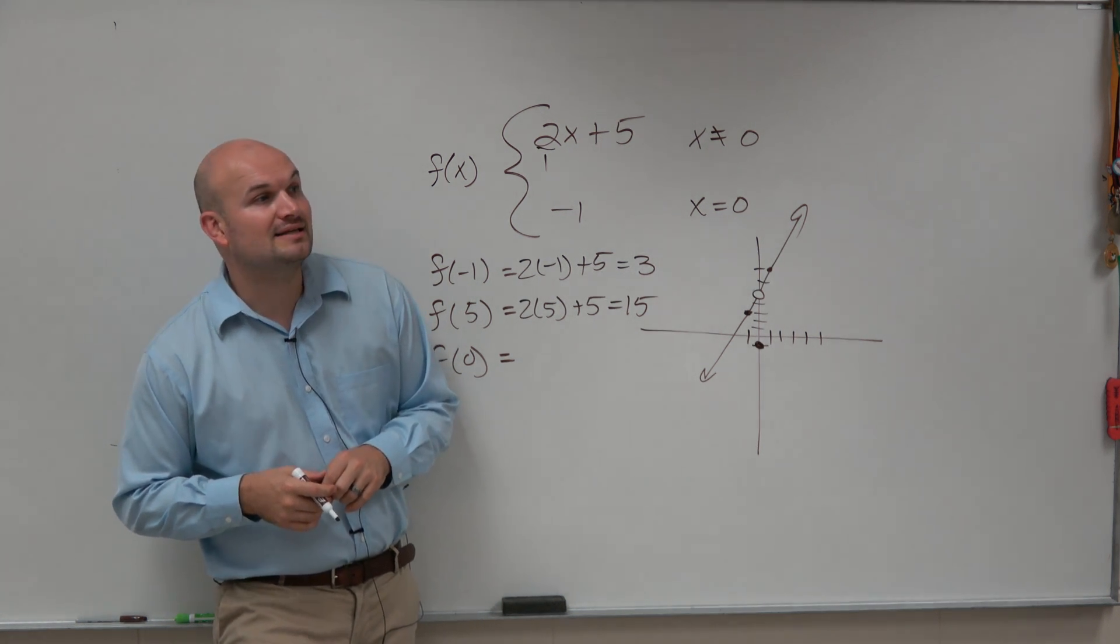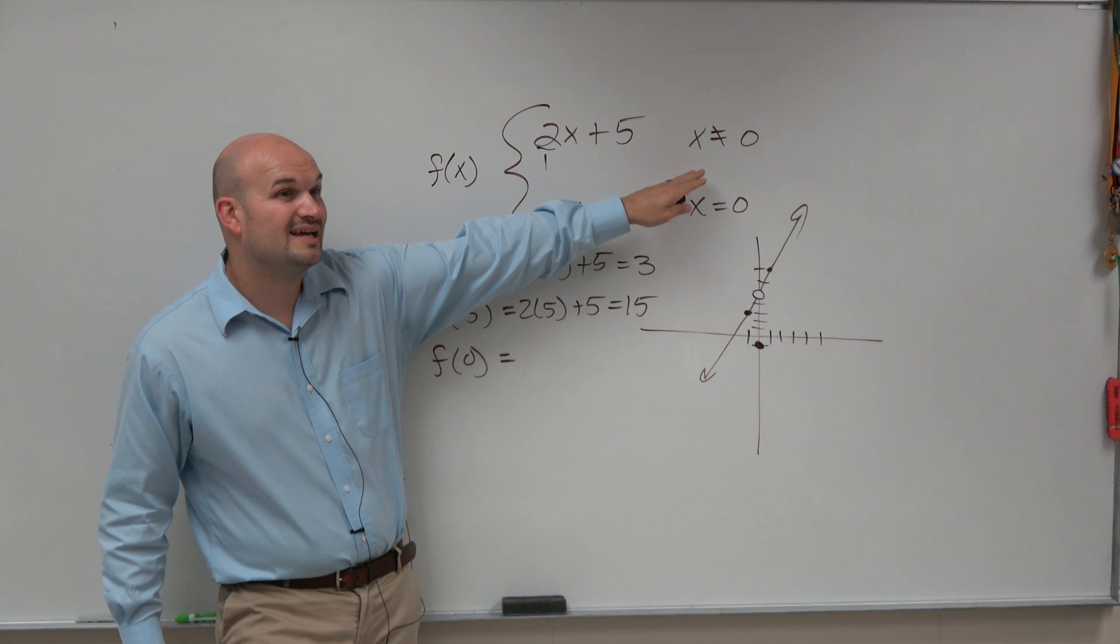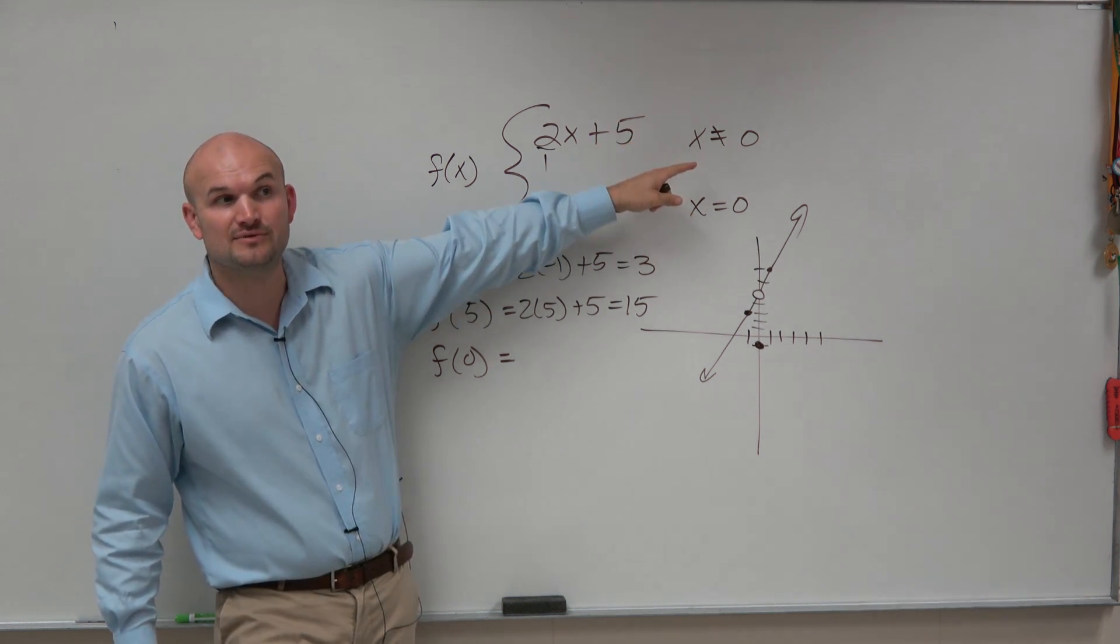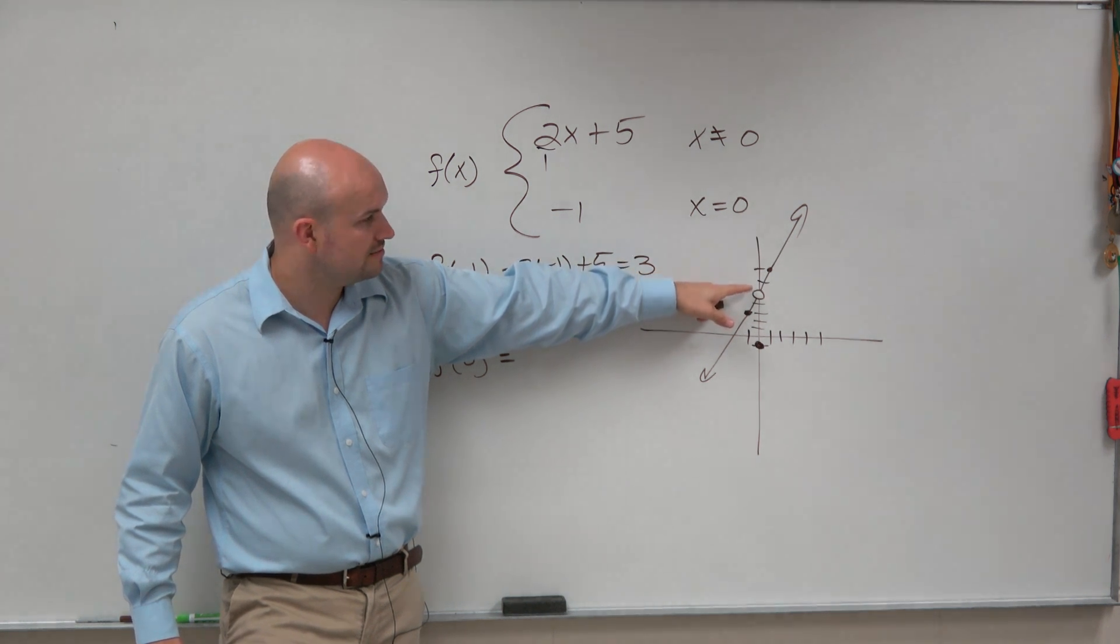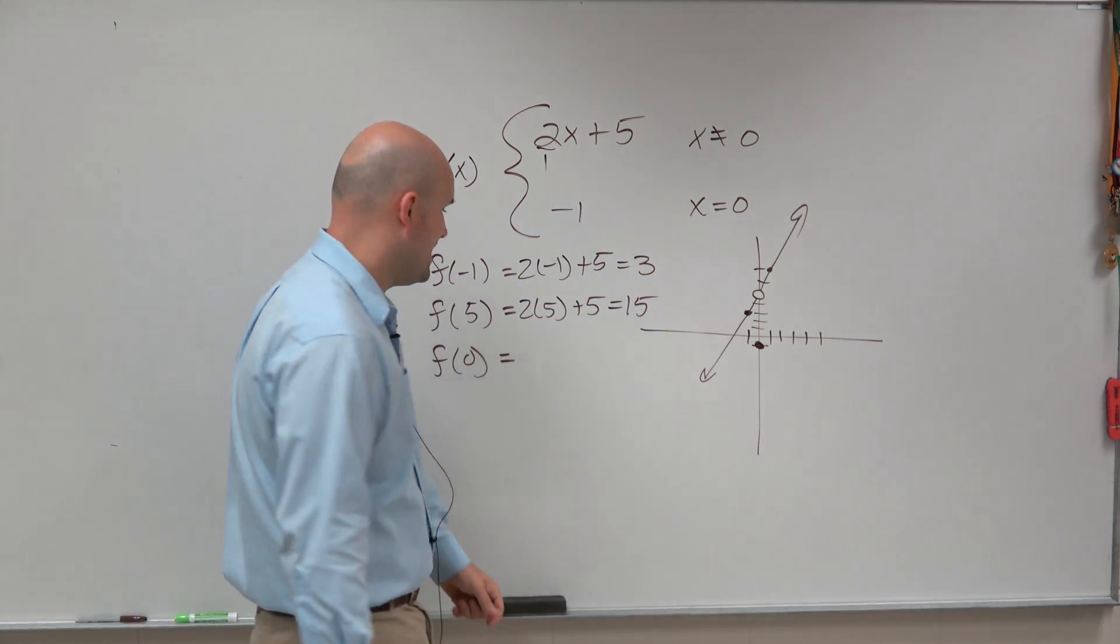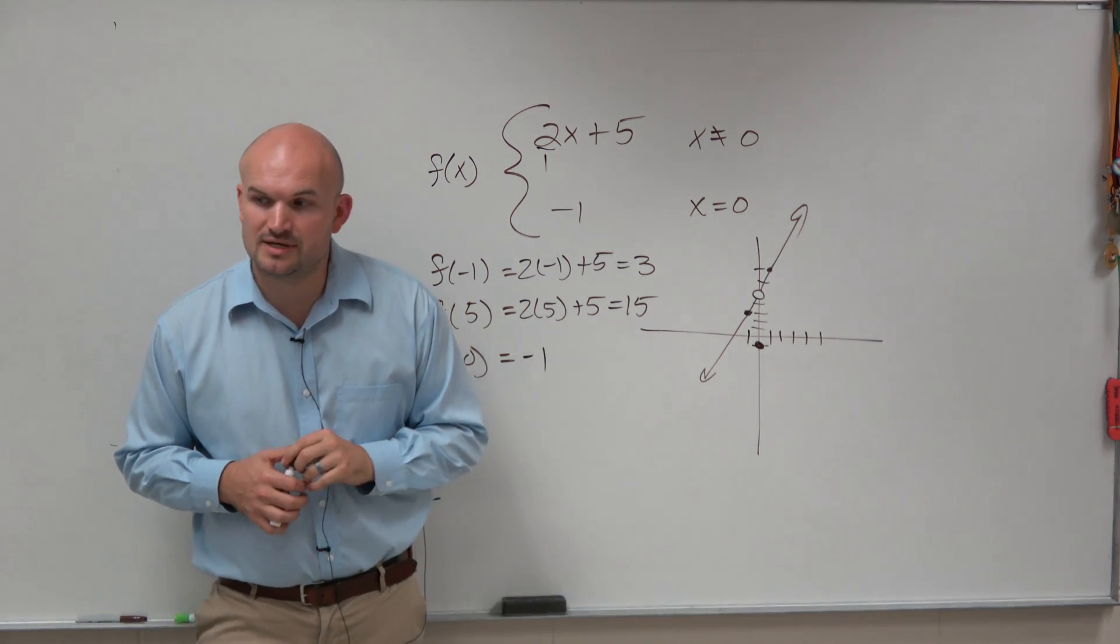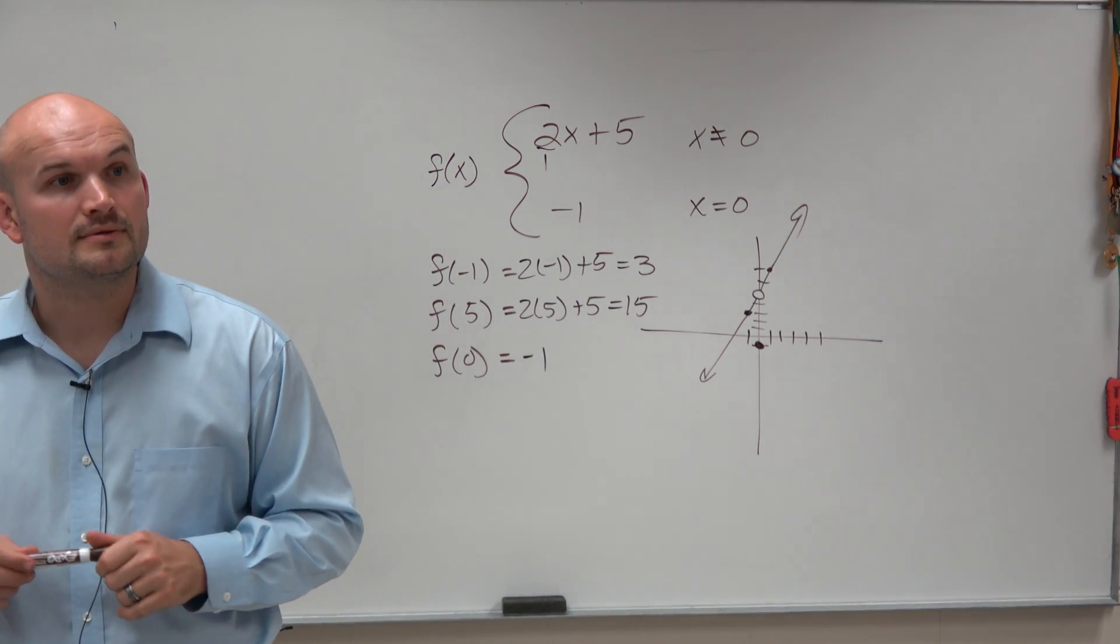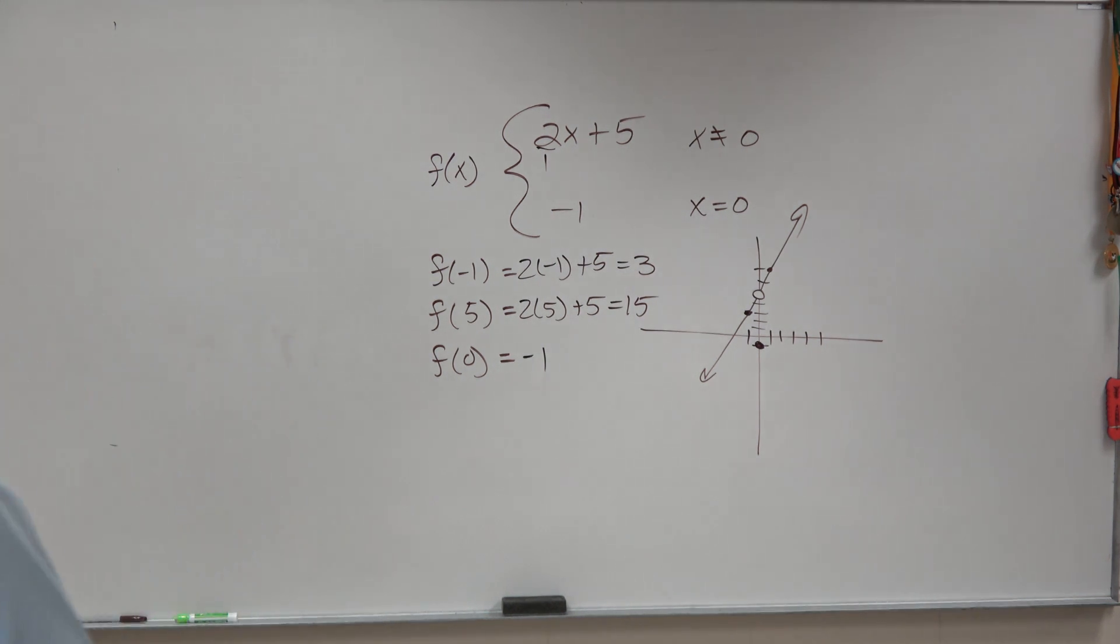Last but not least is going to be doing f of 0. Well, we have an issue. We can't use this function for f of 0 because it says x cannot equal 0. Well, if you look at the graph, what is the function equal to at 0? Negative 1. No math is needed, or no algebra is needed. You can just evaluate equals negative 1. So the answer is negative 1? Yeah, because that's what the function, remember the function contains both of those.